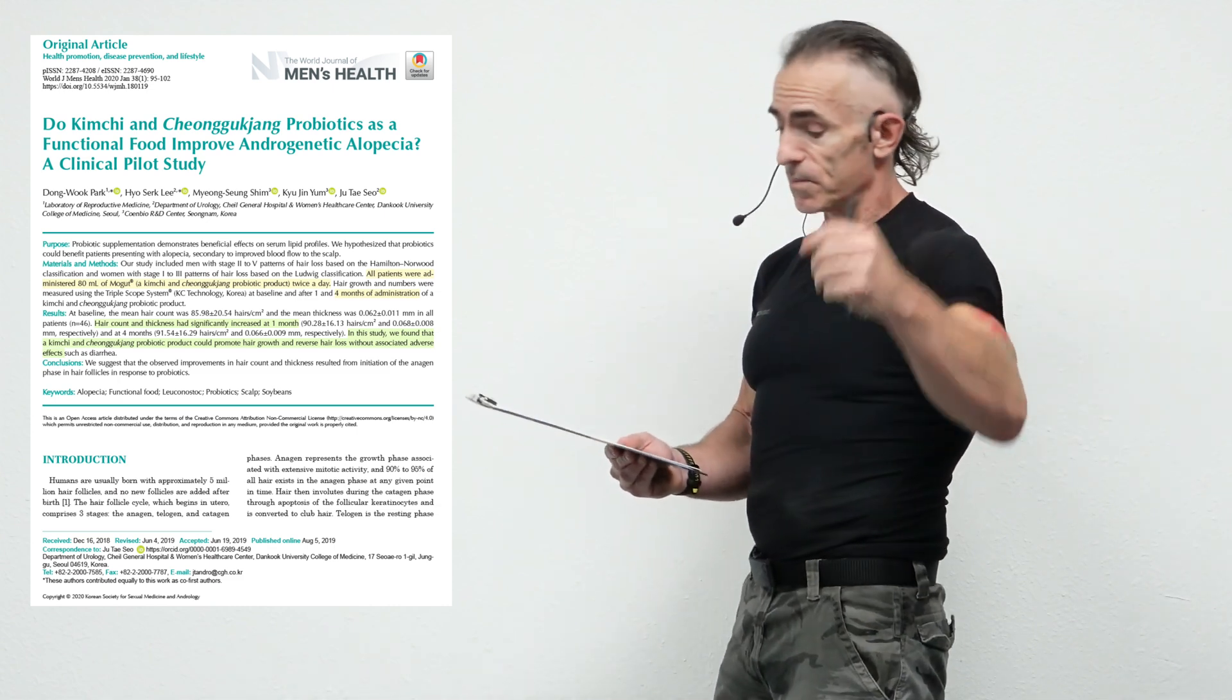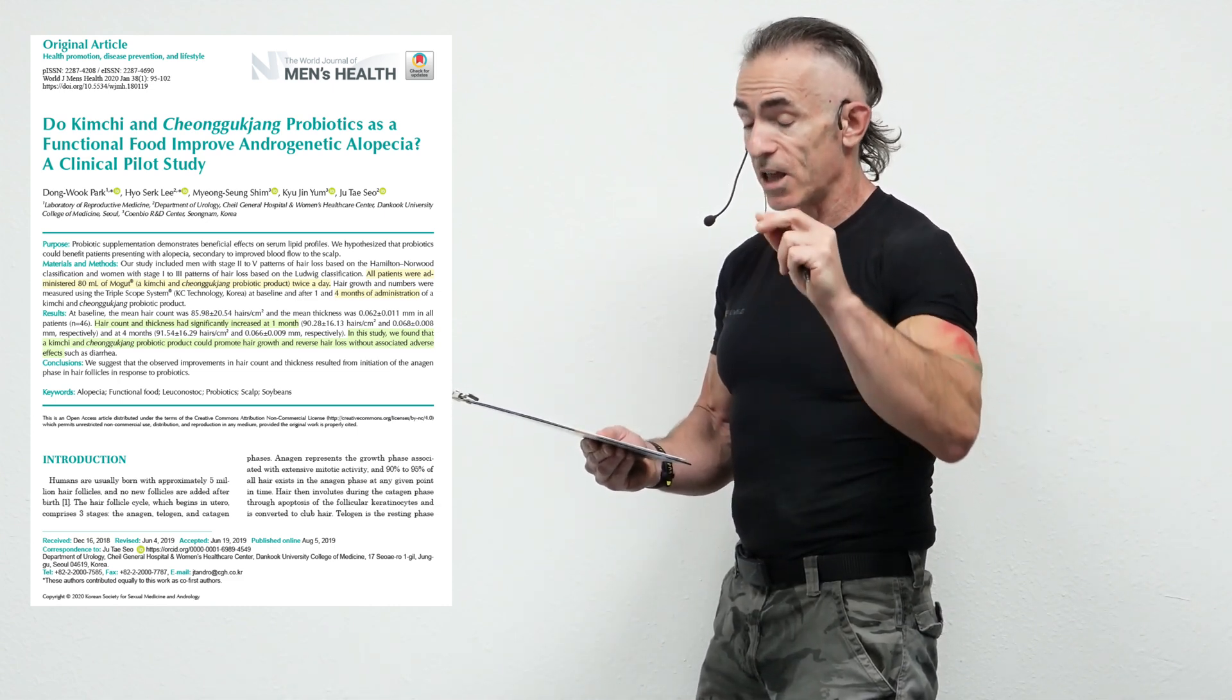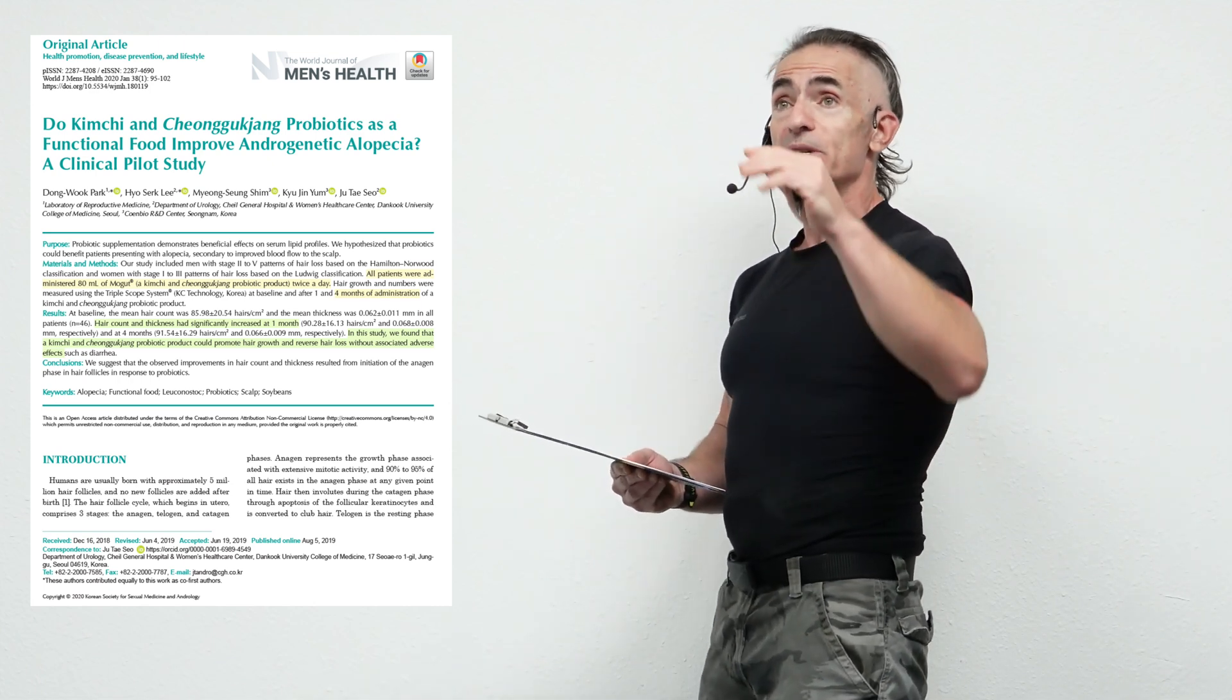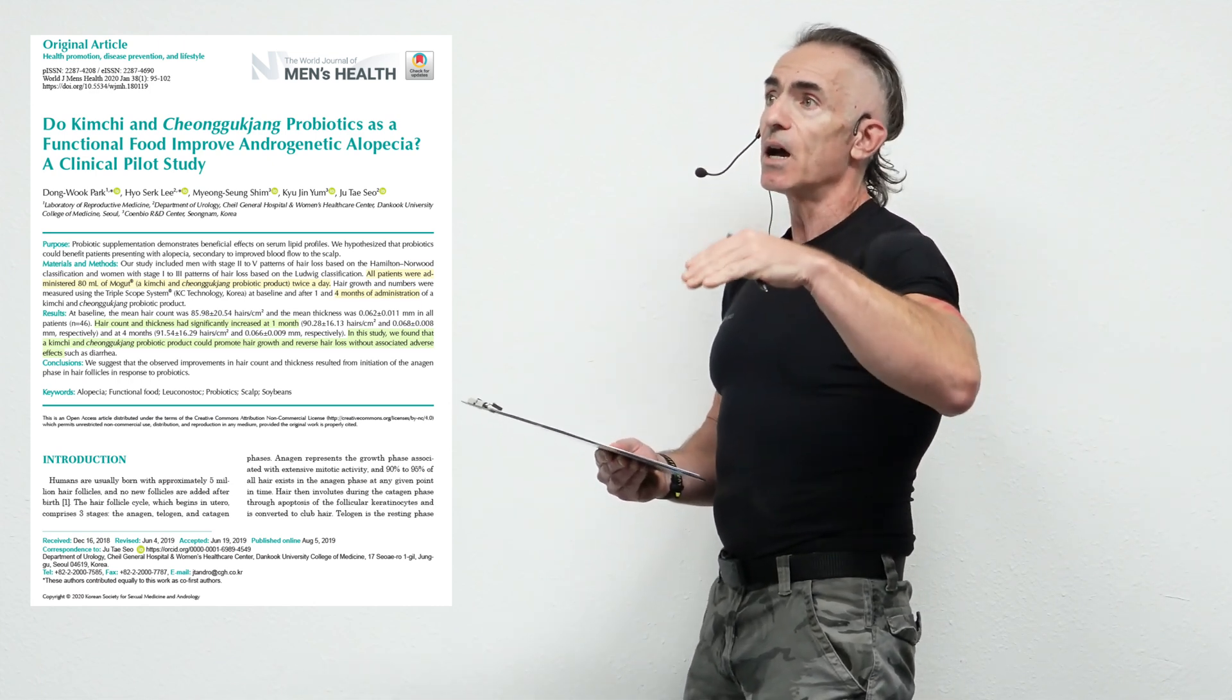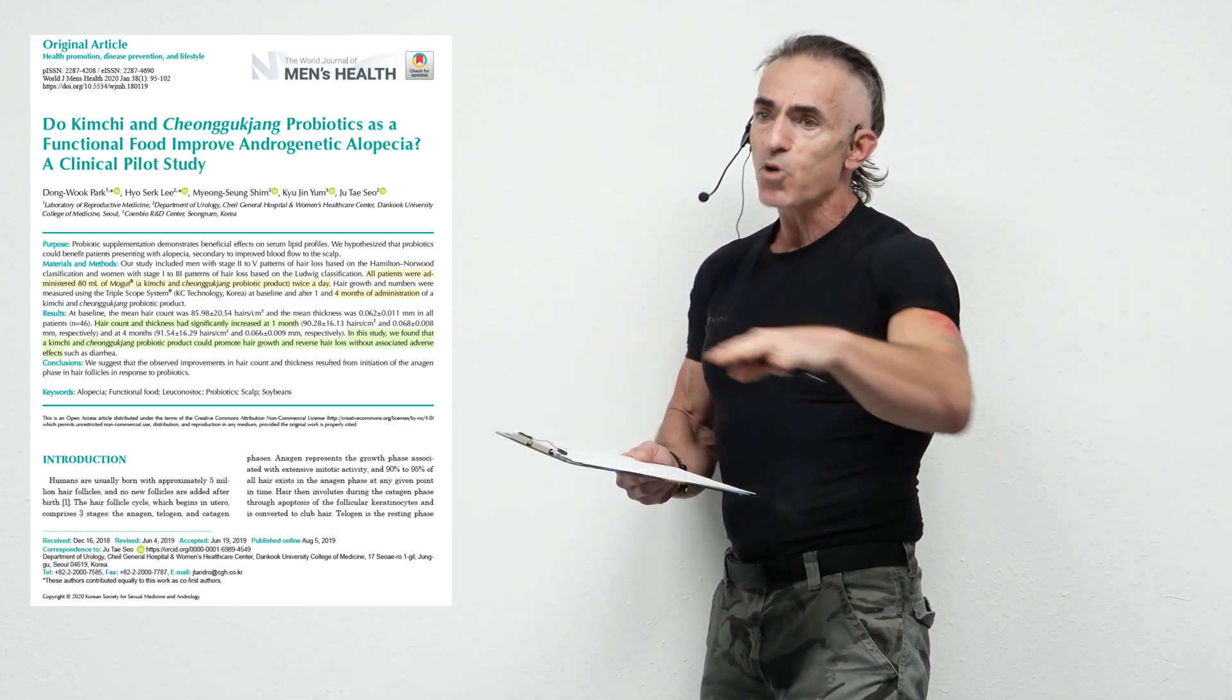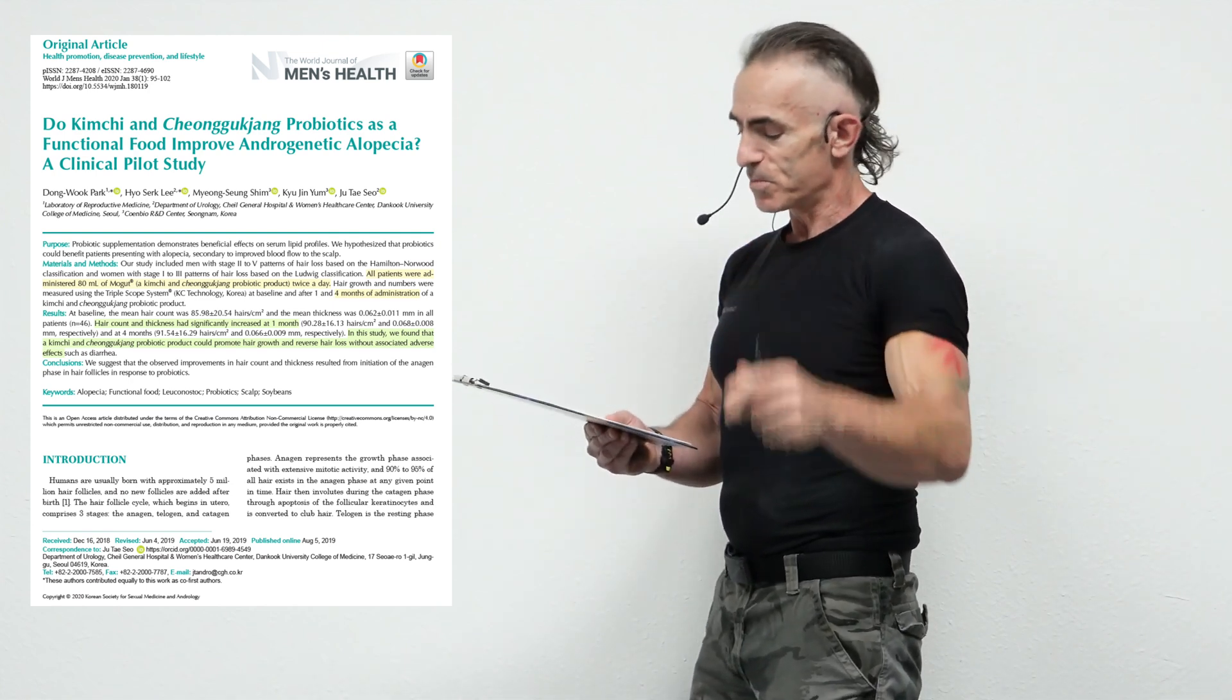And that leads us to this study. Do kimchi and Shunggu Zhang probiotics as functional food improve androgenetic alopecia? And boy, do they do. Now, keep in mind also, as caveat, this is not a Shunggu Zhang soup. This is basically probiotics. They described it more like a yogurt, per se.